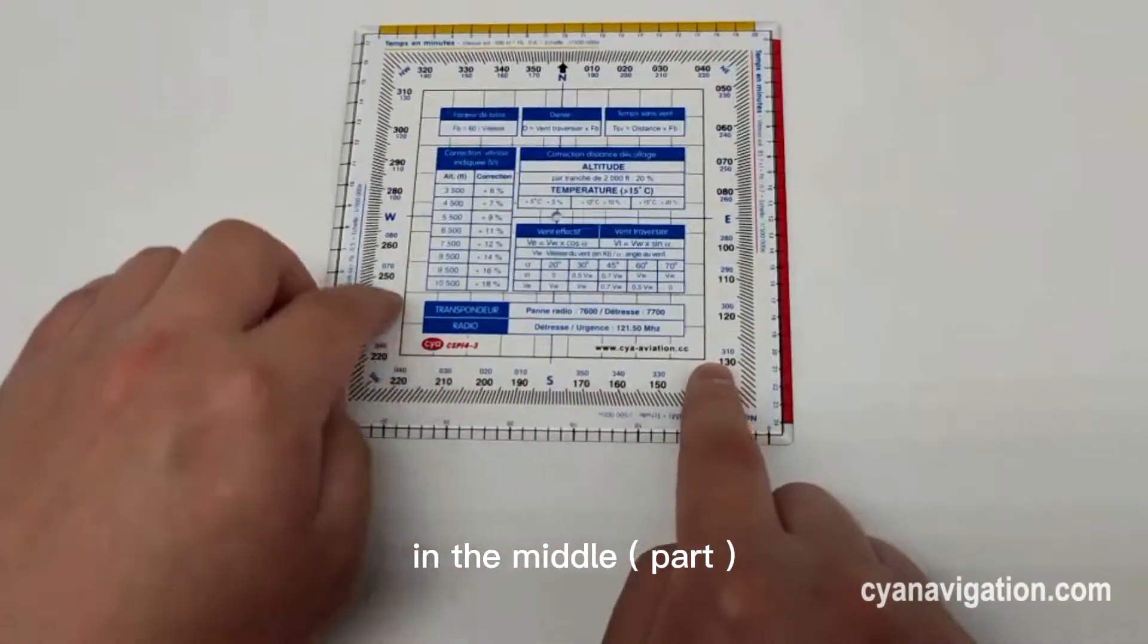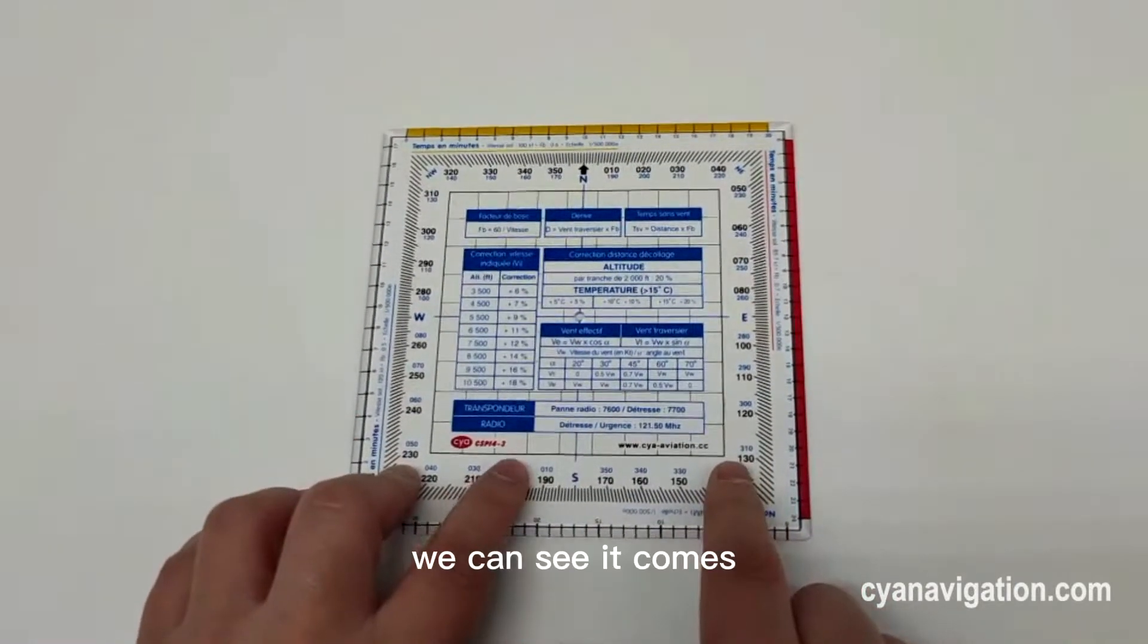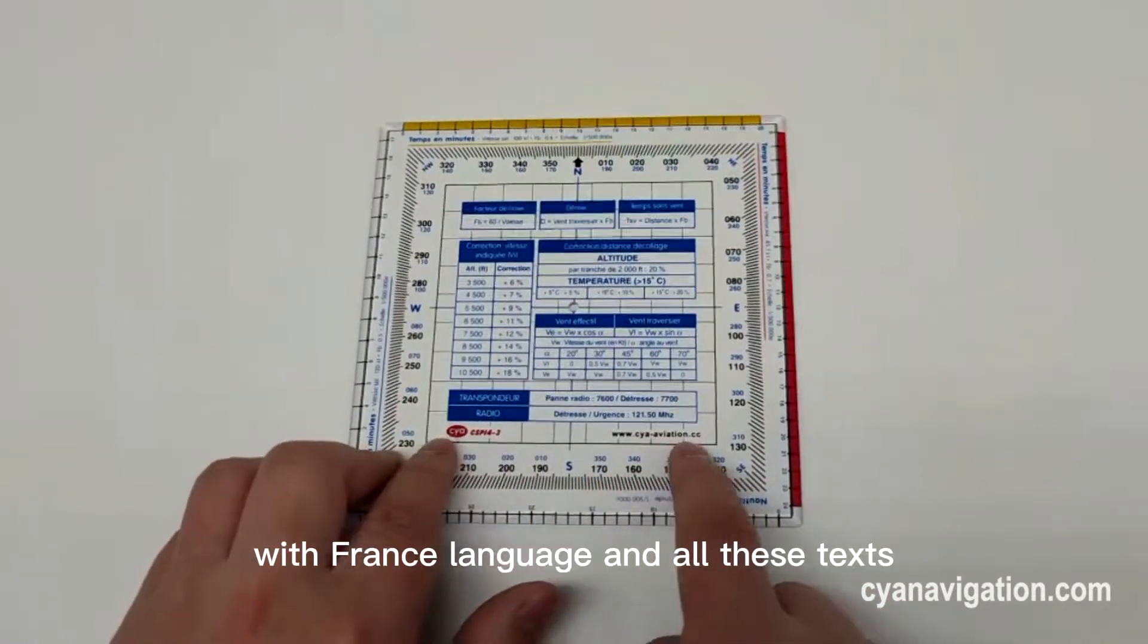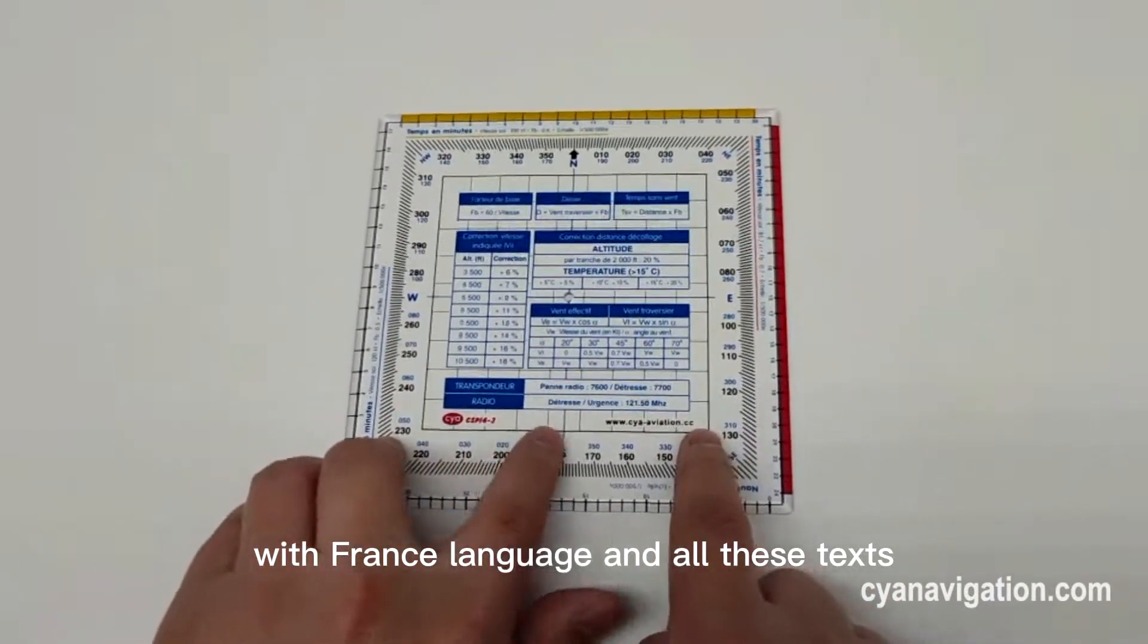In the middle, we can see it comes with four French language and all these texts.